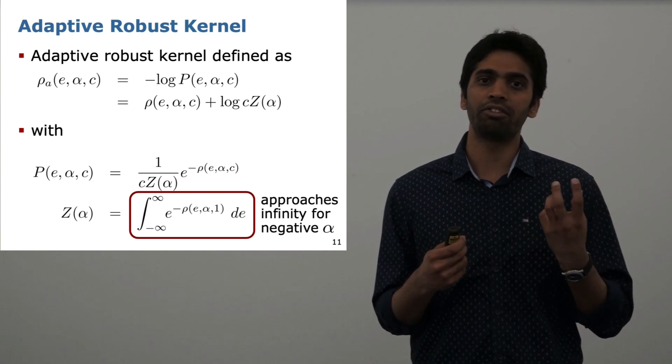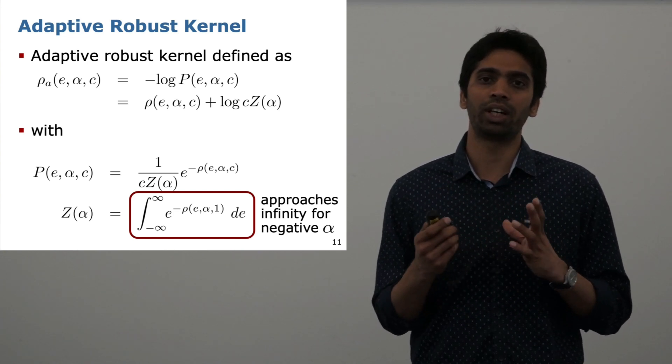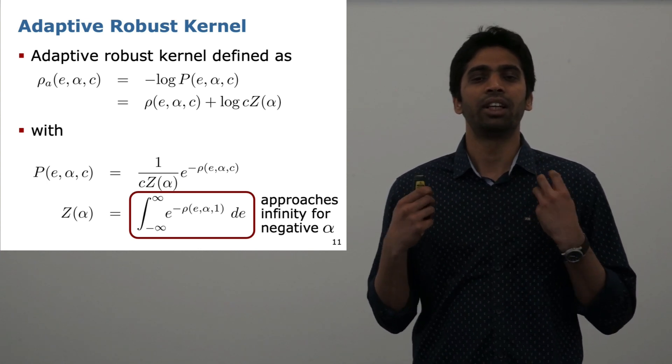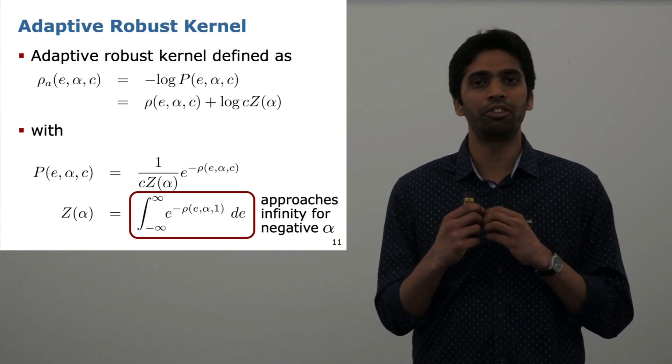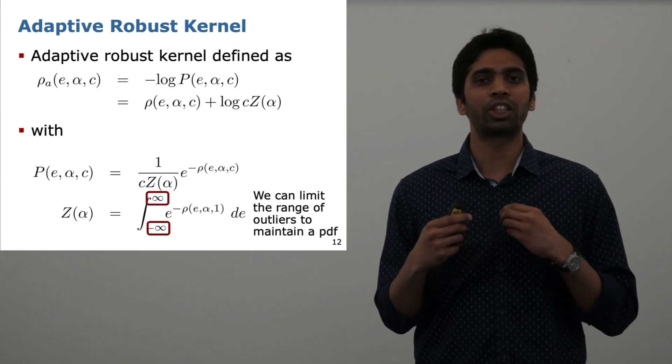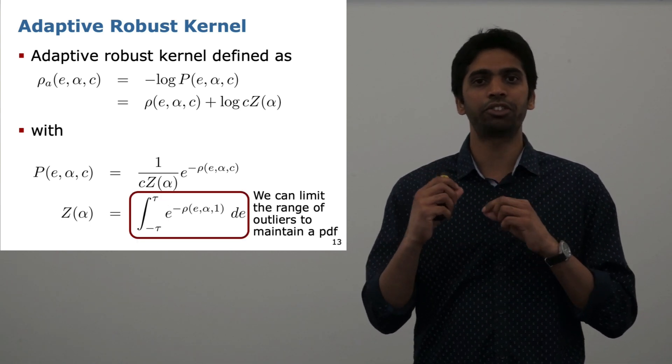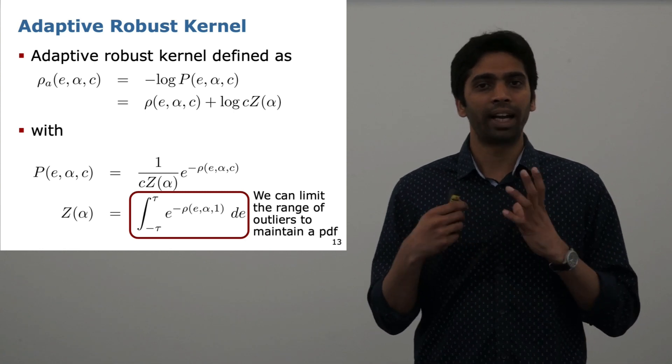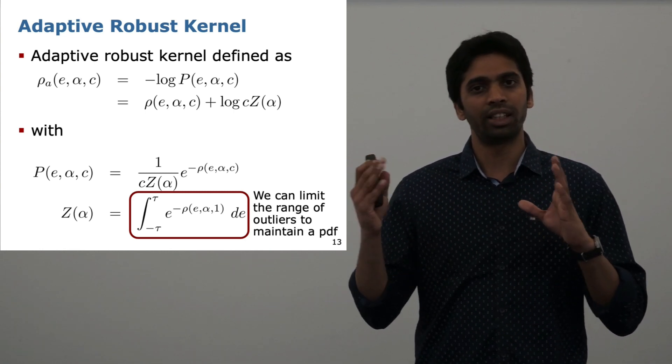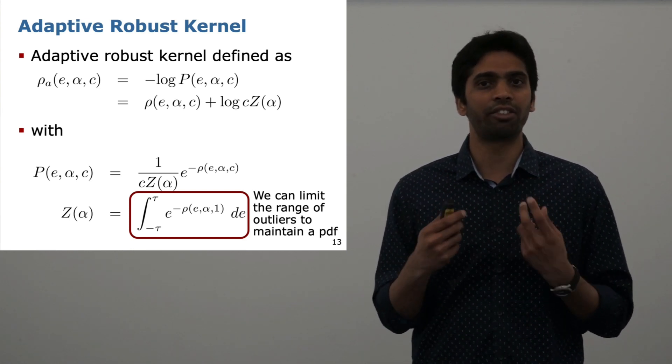In the original formulation, as alpha goes towards negative values, this partition function is not defined for negative values. Therefore this limits the original Barron's formulation to be used only for the positive range of alphas. In our work, we extend this by actually limiting the integral term in the partition function to a range from minus tau to tau. By doing this, we are now able to regain the larger alpha range by going into the negative values, which are needed in several applications.